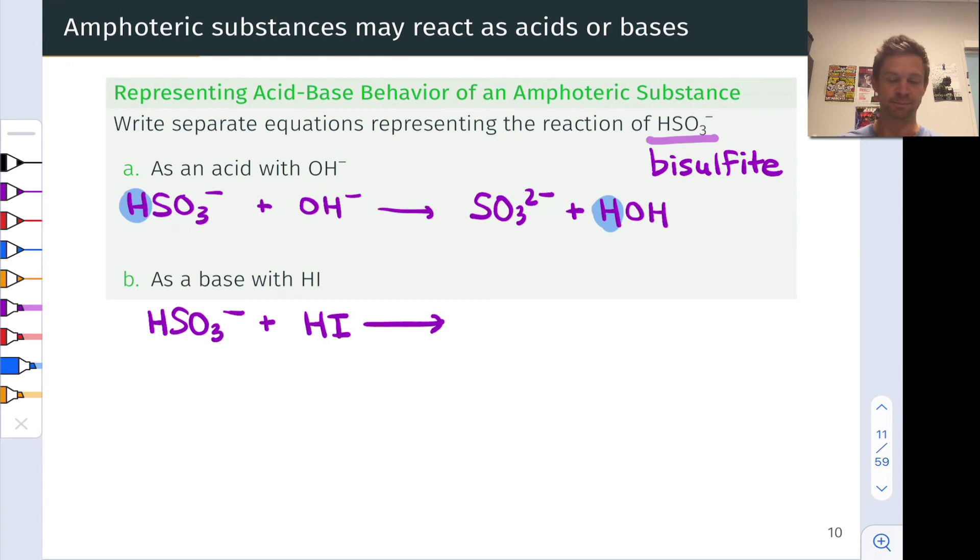What about as a base? Now we have HI acting as the acid. There's the acidic proton. That proton gets transferred to HSO3-, and the resulting product is H2SO3, now neutral because the proton has increased the charge of that molecule by one unit. Losing the proton has resulted in a decrease in charge of HI to form I-, the conjugate base of HI.